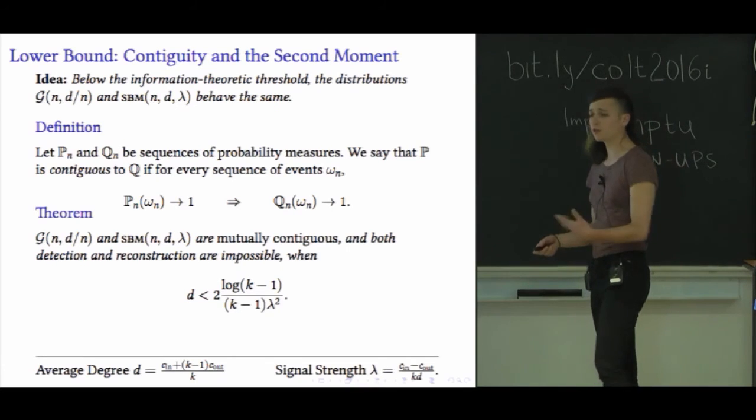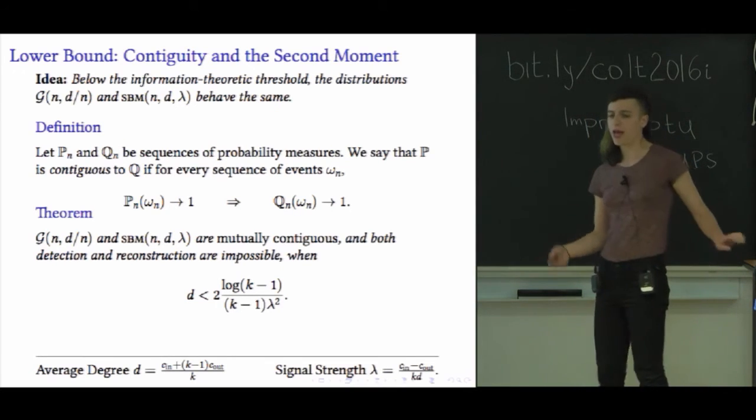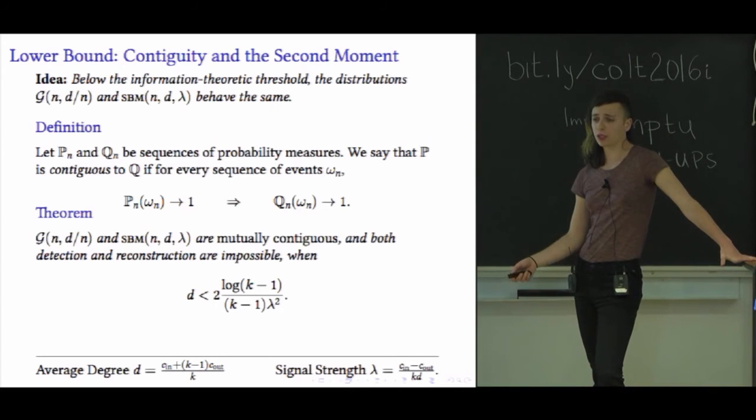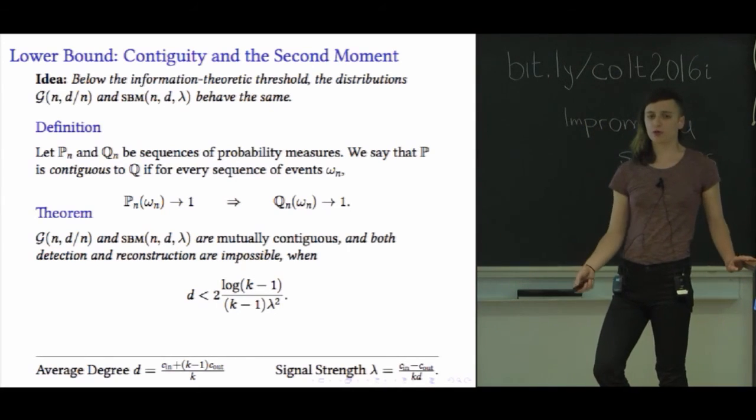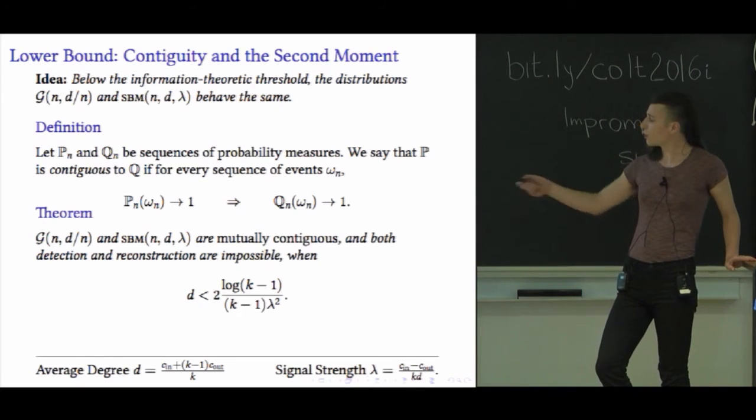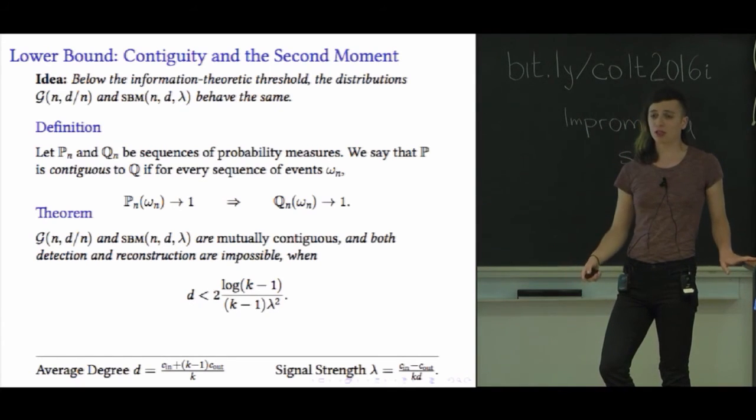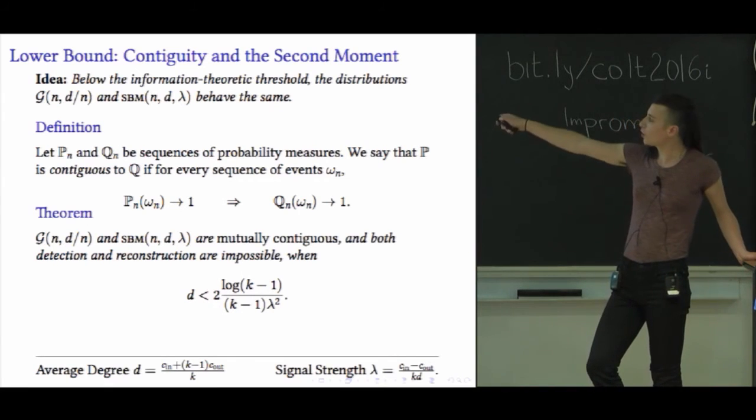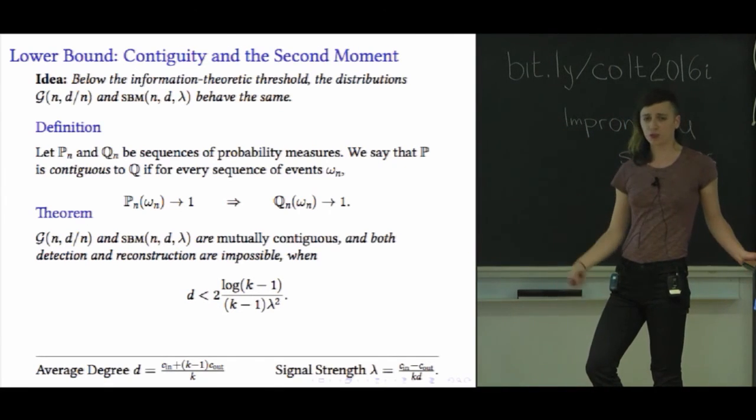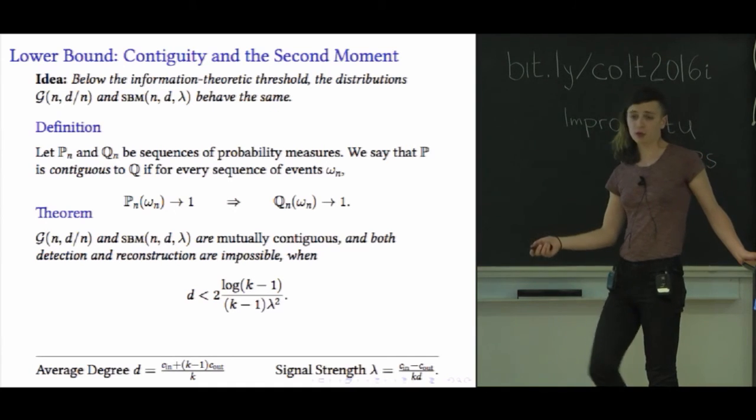Contiguity, at least for detection, is the right thing to be thinking about here. Imagine I had an algorithm that with high probability could tell you exactly when a graph from the block model was generated from the block model. Well, if this property holds, then that algorithm would also have to tell you that a graph generated from the Erdős-Rényi model was generated from the block model. And then we're kind of sunk. So it turns out that one direction of this mutual contiguity relation is pretty easy to prove, at least compared to the other one. Let me tell you about the easy direction.